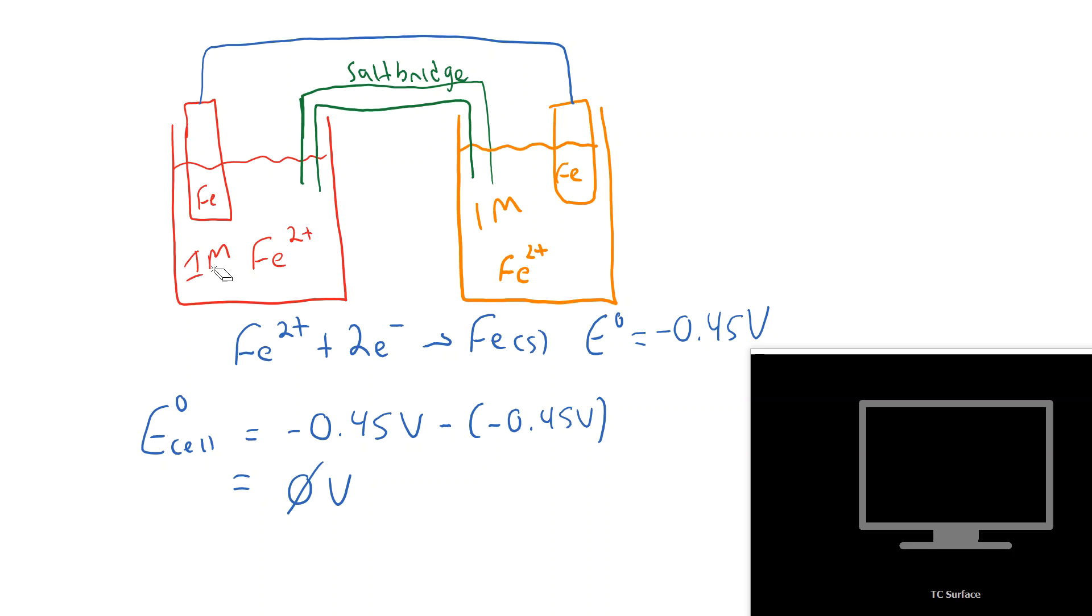So instead of having one molar on the left, I'm going to go ahead and delete that. What I'm going to do is change that down to 0.050 molar. So I've lowered the concentration of iron 2+ on the left. I've kept it same on the right. So it's still one molar on the right. What's that going to do?